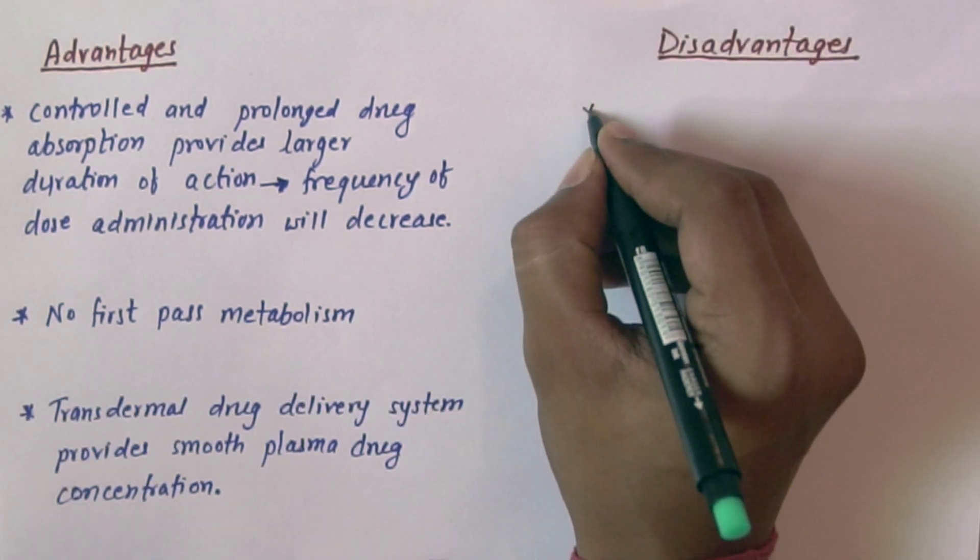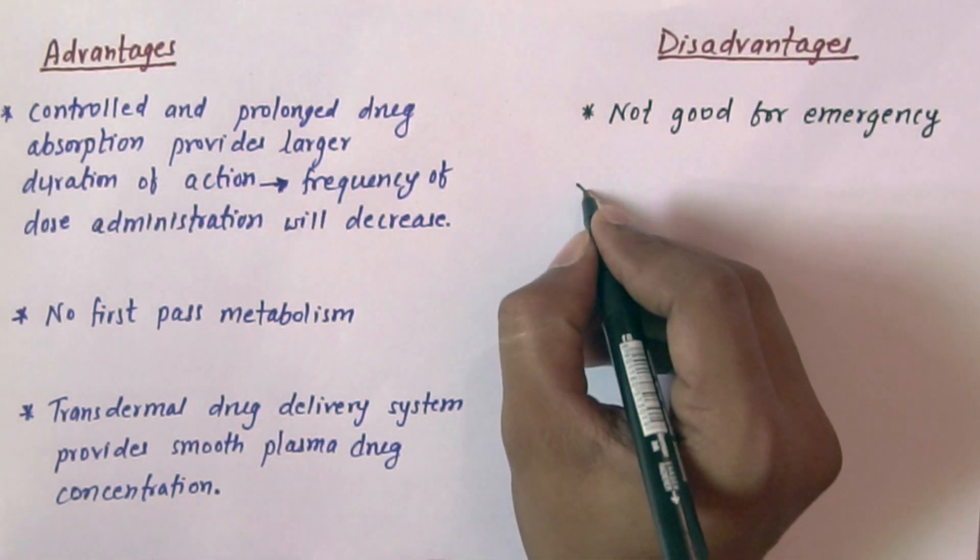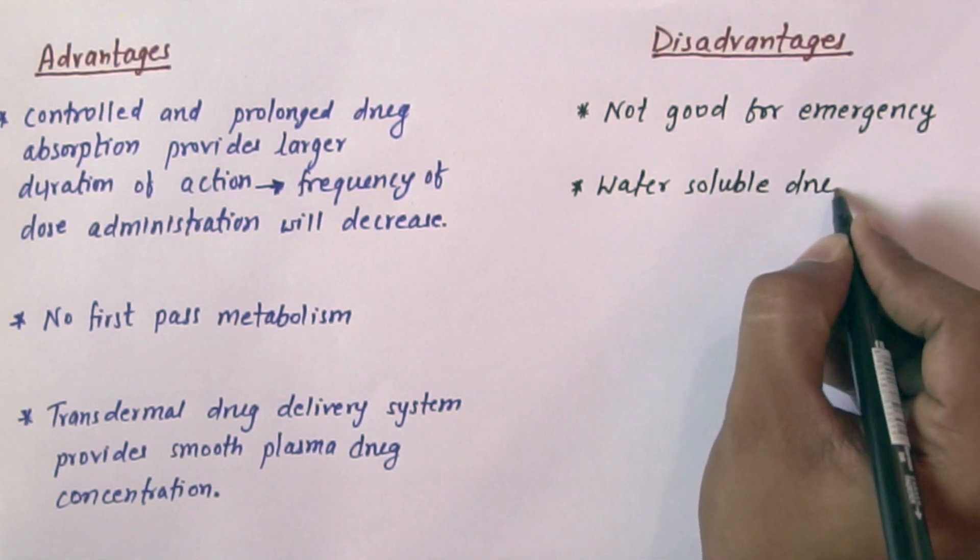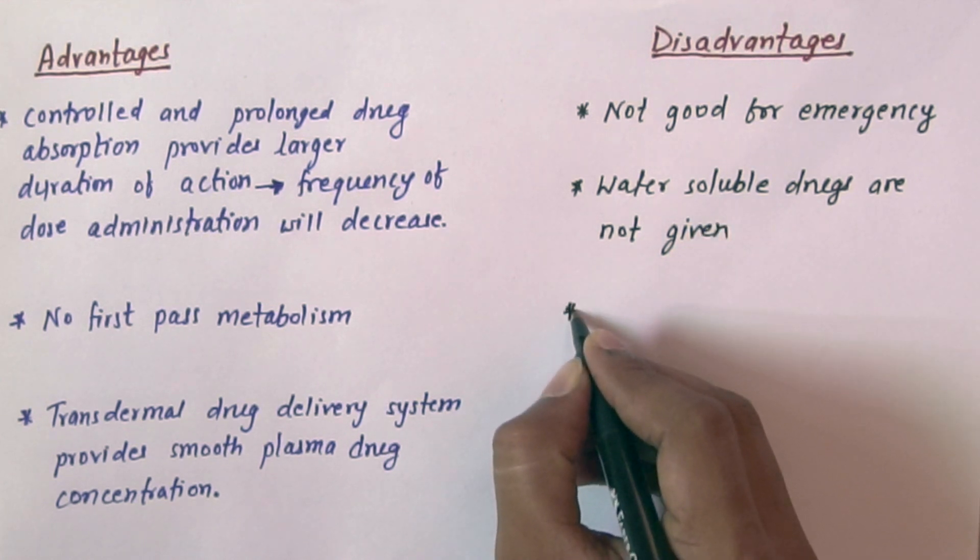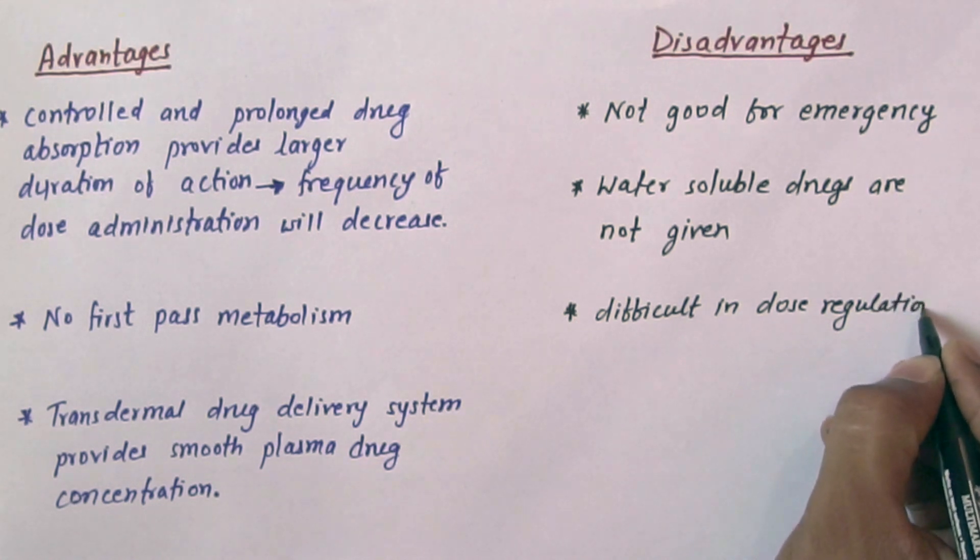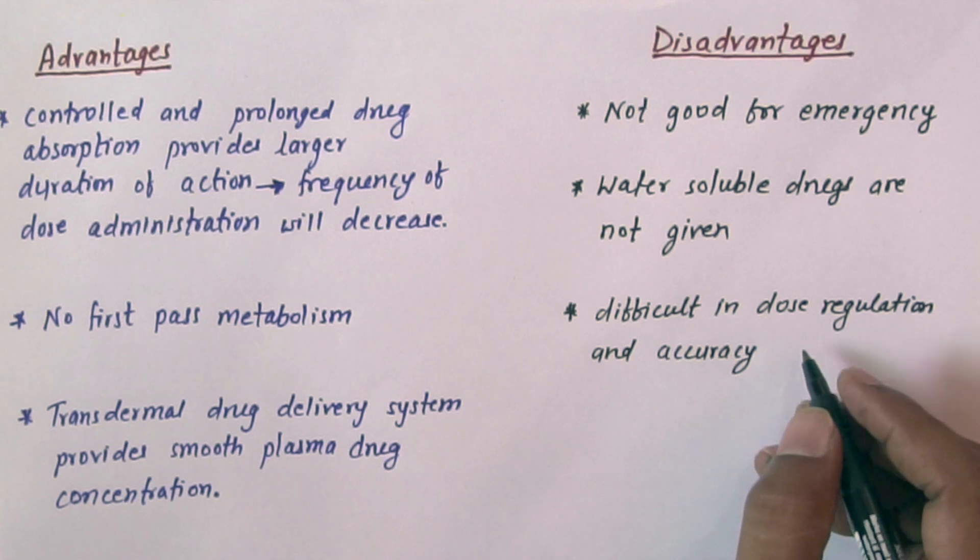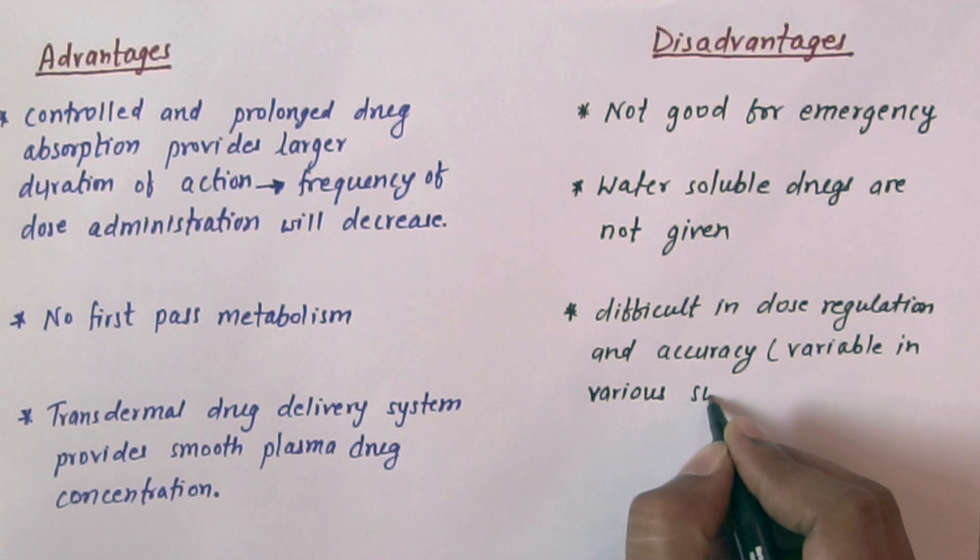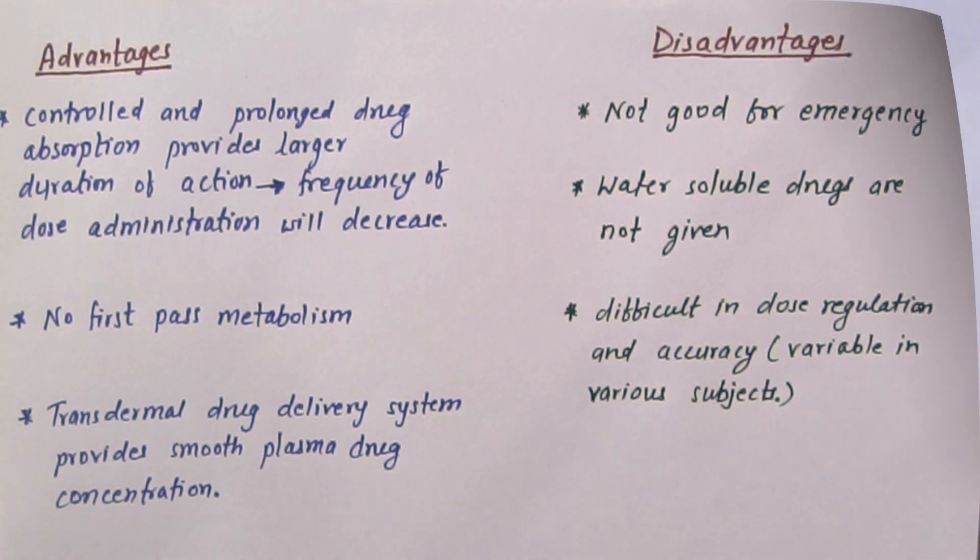And transdermal drug delivery system provides a smooth plasma drug concentration. Now we will discuss about disadvantages. So it's not good for emergency. Water-soluble drugs are not given medication, and difficulty in dose regulation and accuracy because drug absorption pattern is variable in various subjects. So it will vary.